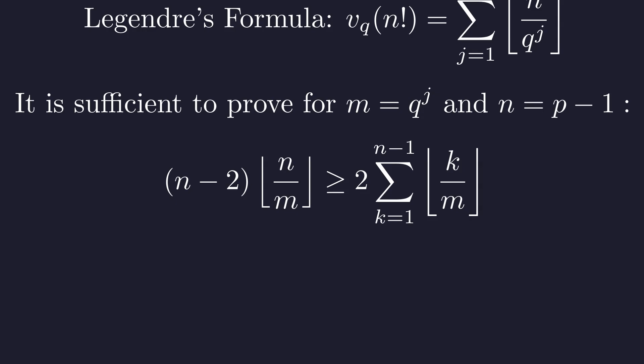Here's what we need to prove: the left side counts how many complete blocks of size m fit into n, weighted by n minus 2. The right side is twice the sum of how many blocks fit into each k from 1 to n minus 1. Intuitively, we're comparing the bulk contribution against the accumulated contribution.